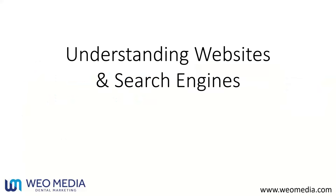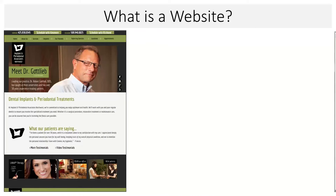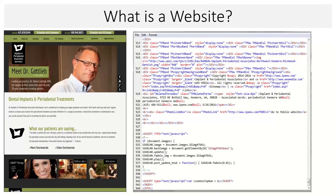Let's start with a cursory understanding about websites and search engines as a foundation for getting into the details of SEO and PPC. What is a website? We all know what it looks like — a doctor's picture, navigation bar, text and images. But this is also the same website shown as HTML code, which is what search engines look at. When you think about how Google determines how to rank your website, Google doesn't look at the website like you and I do — Google reads the code, as do Yahoo and Bing.